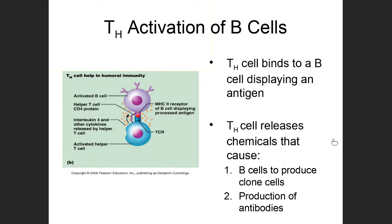We looked at a diagram showing a B cell binding to its one specific antigen. Once a B cell has done that, it acts as an antigen-presenting cell, or APC. It goes and finds a helper T cell, and that helper T cell is going to activate the B cell so that humoral immunity can get going.